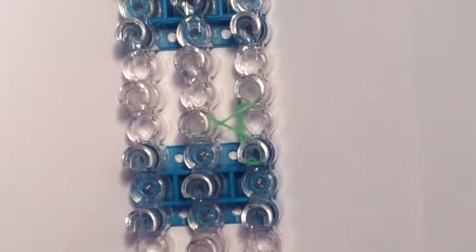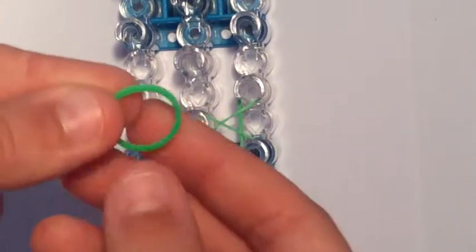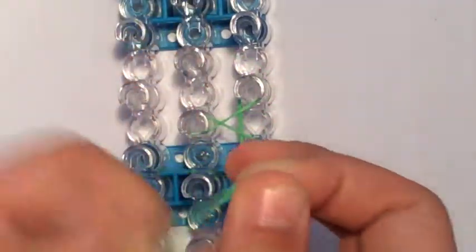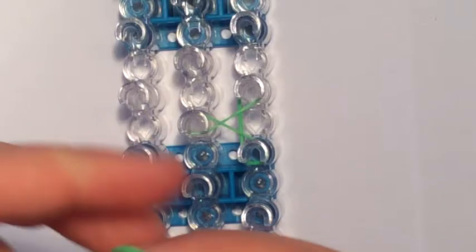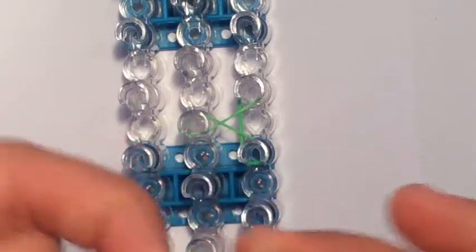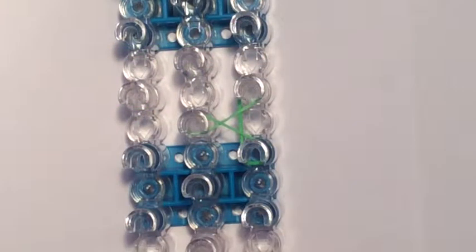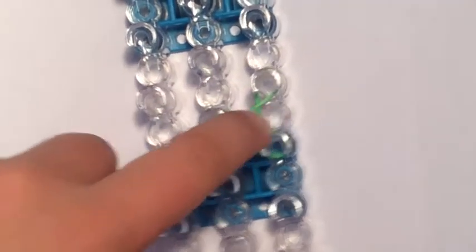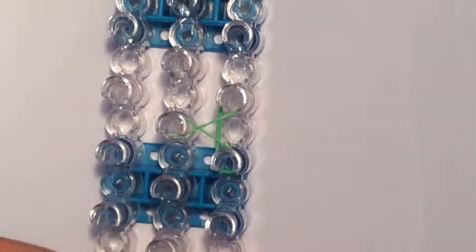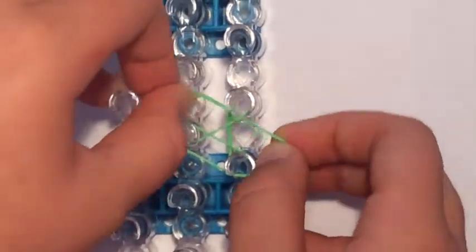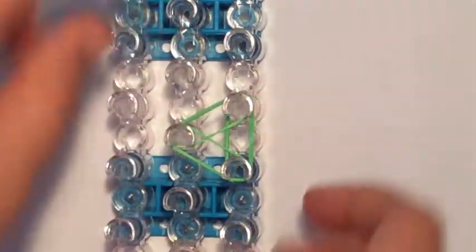The next step is very very simple, we're just going to take a color band. I'm going to be using all the colors I'm going to be using are going to be green, so I'm just using green all the time. But if you're using multi colors, if you're putting purple here, this next band is going to be purple as well. Take another band and just place it on top of those three bands.